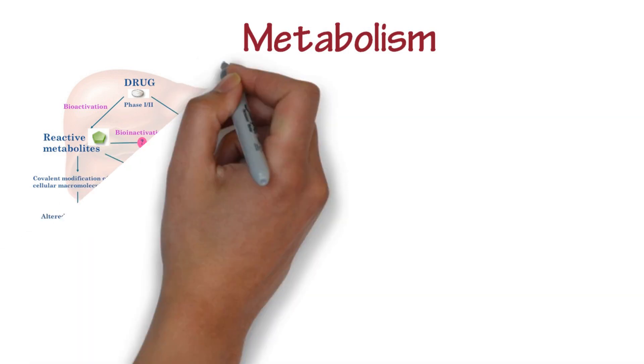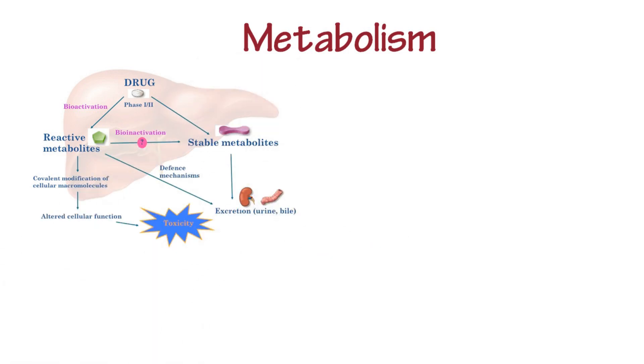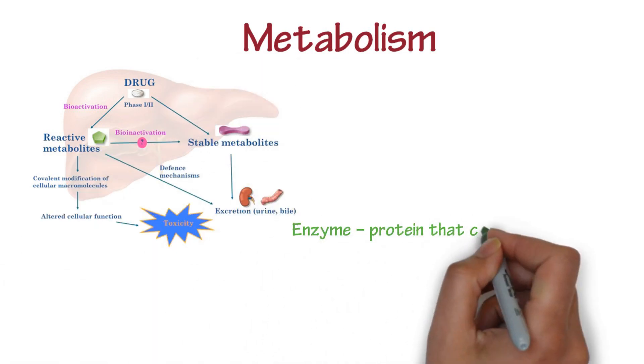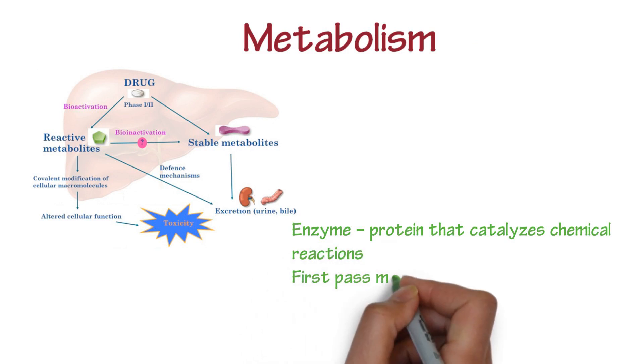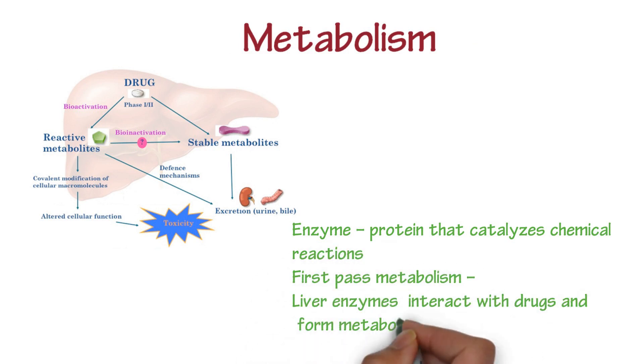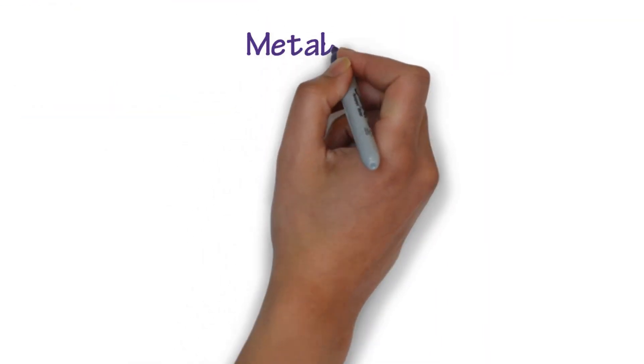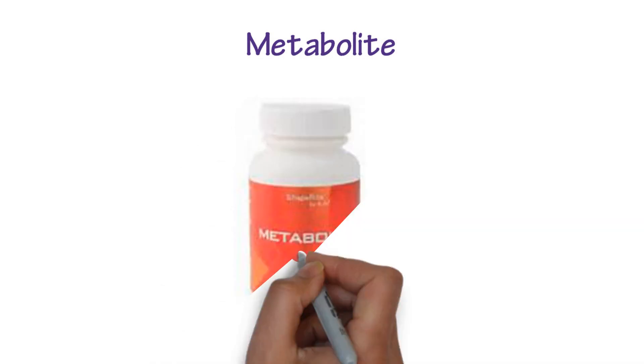Metabolism is the process of transforming drugs. The primary site of drug metabolism in the body is the liver. Enzymes are proteins that catalyze chemical reactions. First pass metabolism occurs when liver enzymes interact with drugs and form metabolites. The transformed drug is called a metabolite. At this stage, the drug will produce effects in the patient.